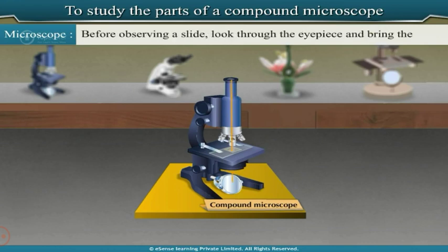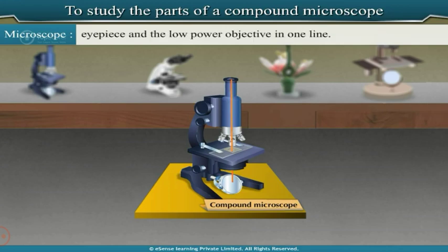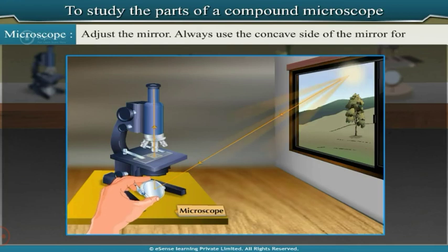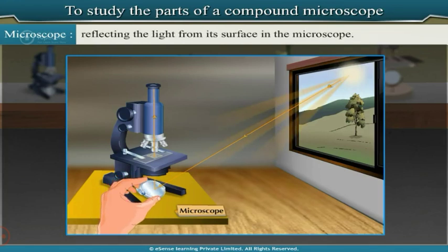Before observing a slide, look through the eyepiece and bring the eyepiece and the low power objective in one line. Adjust the mirror, always using the concave side for reflecting light into the microscope.